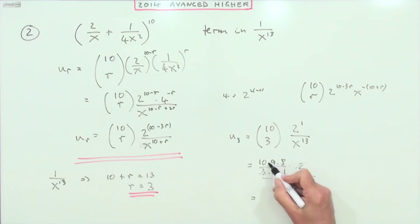Well the 2s cancel, the 3 knocks out that, 3 times 8 is 24, 240. 240 over x to the 13. That's the required term.